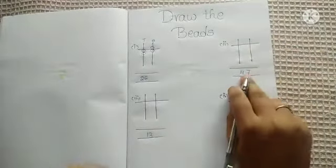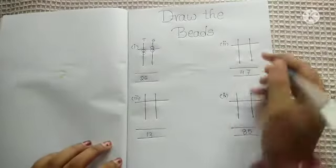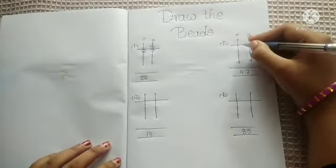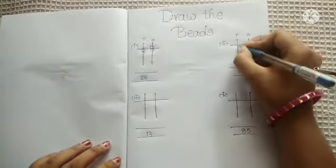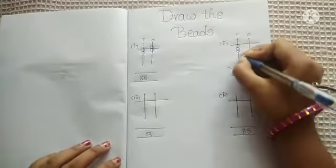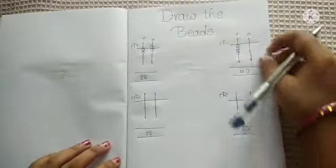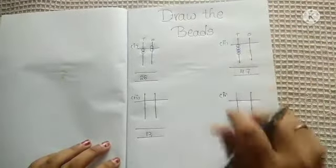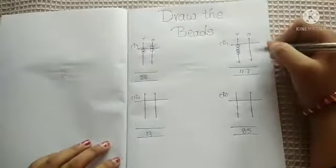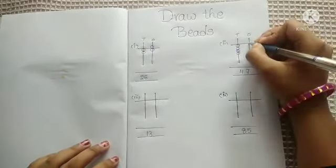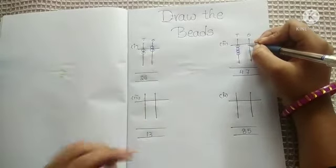They give 47. This is the tens place and this is the ones place. In the tens place we have to draw four beads — one, two, three, four. So we have drawn four beads in the tens place. Now here we have to draw seven beads, meaning one bead on the upper deck and two beads on the lower deck — five, six, seven.